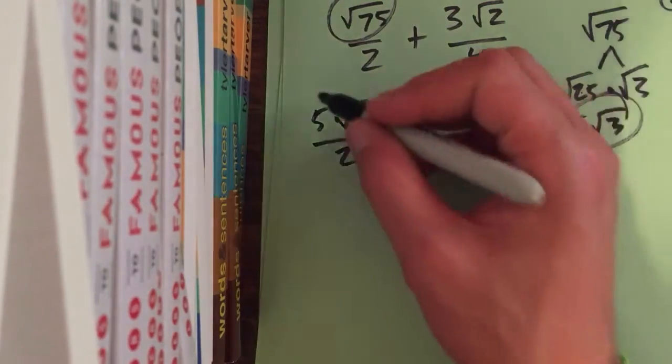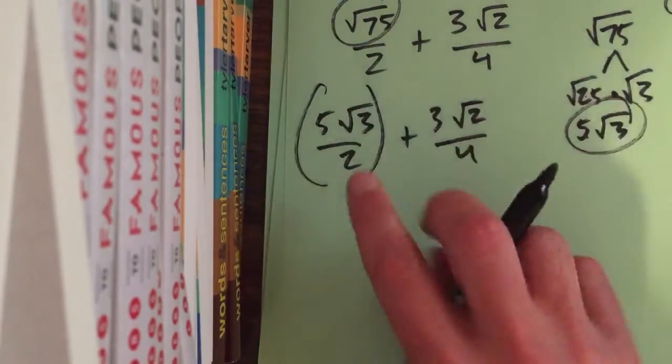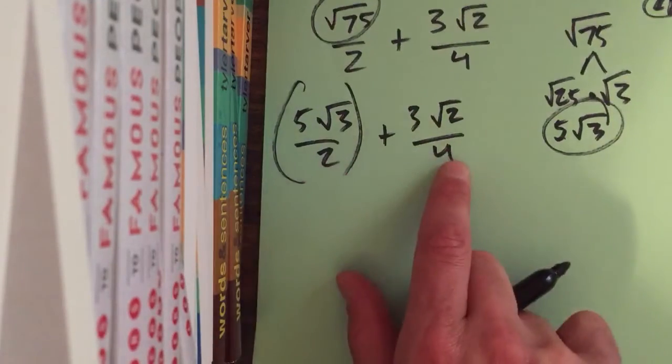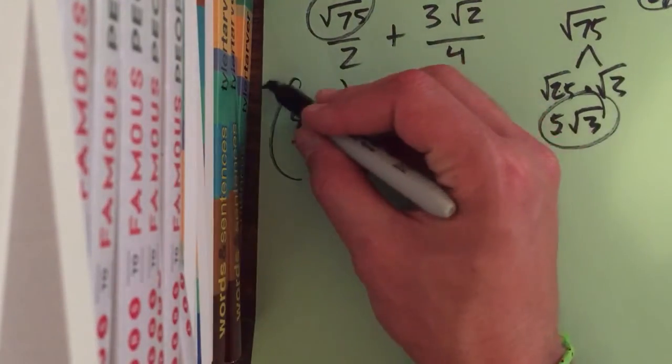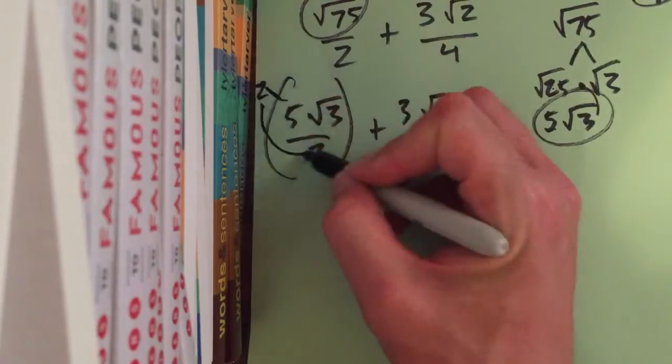So, to do that, you have to multiply. You got to get these to be the same. So, what do you do to make that the same as that? Multiply it by 2. So, I'm going to multiply the top by 2 and the bottom by 2.